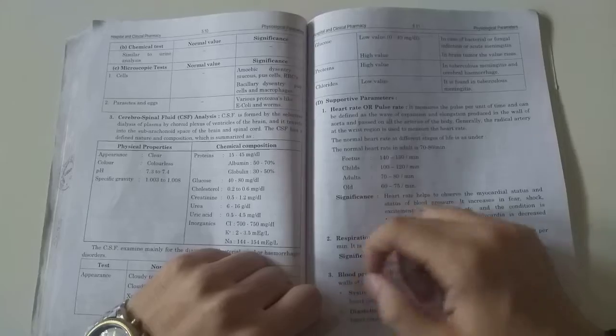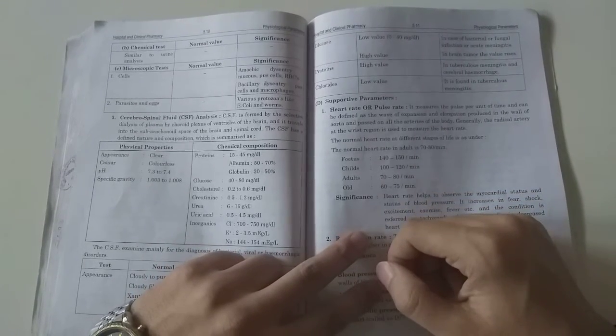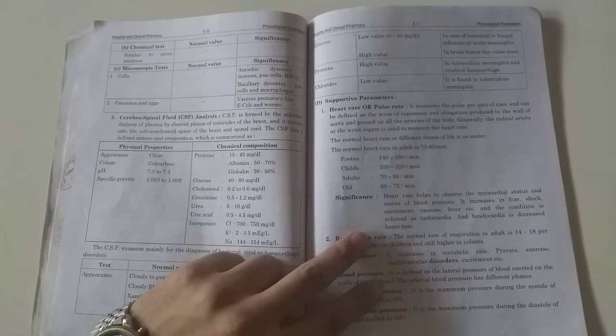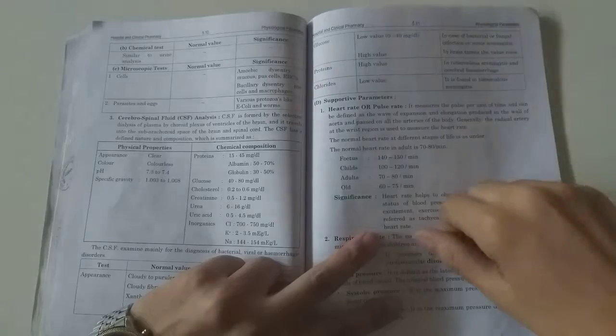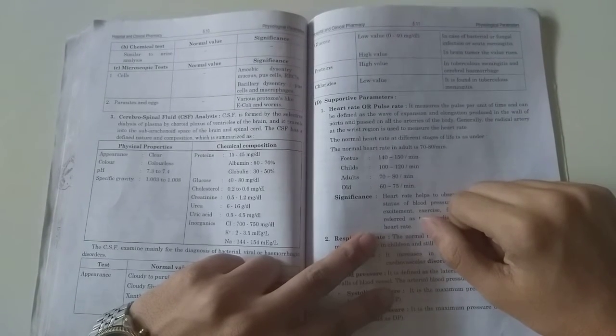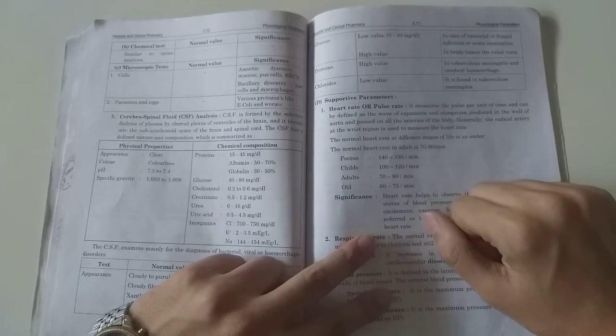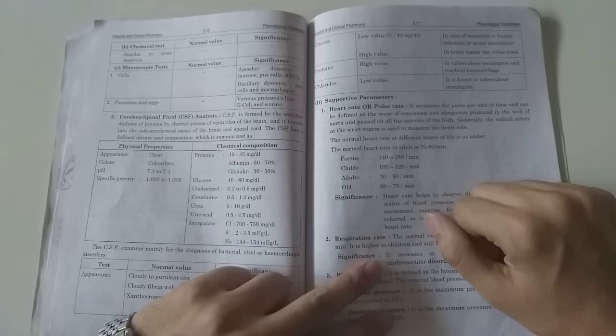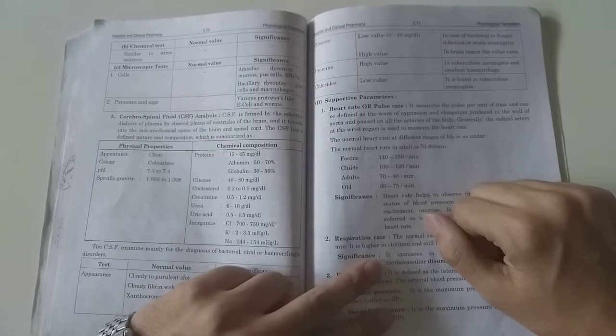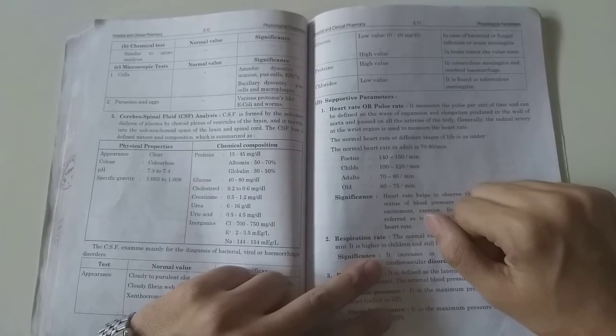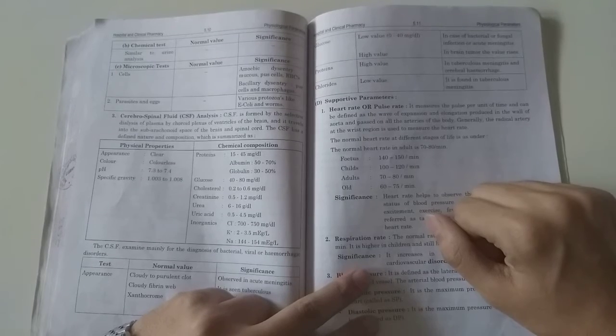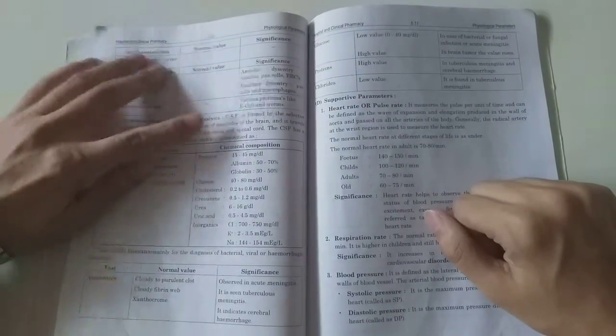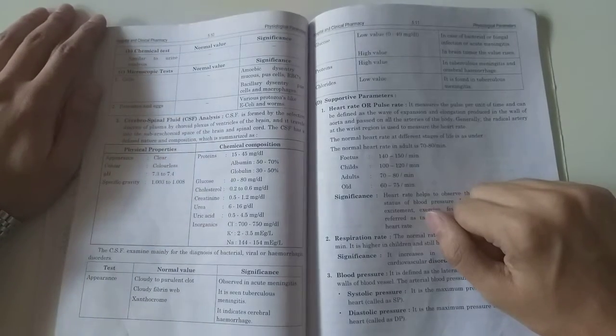The chemical composition includes protein 15 to 45 mg per deciliter, globulin 30 to 50%, glucose 40 to 80 mg per deciliter, cholesterol 0.2 to 0.6 mg, creatinine 0.5 to 1.2 mg, urea 6.6 to 16 mg per deciliter, uric acid 0.5 to 4.5 mg. Inorganics include calcium 2.1 to 2.7, potassium 2.0 to 3.5 mg, and sodium 140 to 150.